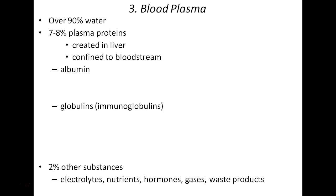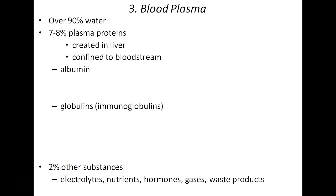Over 90 percent of plasma is water, and seven to eight percent are plasma proteins. These proteins are created in the liver and, because they are so large, cannot move through cell walls well — they are confined to the bloodstream. Important proteins include albumin, globulins, and others we'll examine in a table. Solutes also make up a small but important portion of blood plasma.